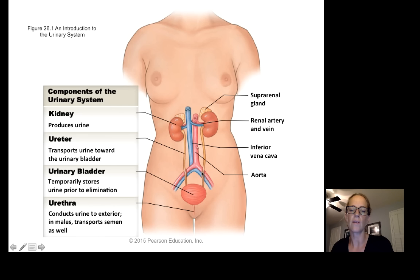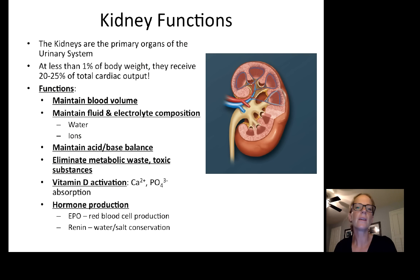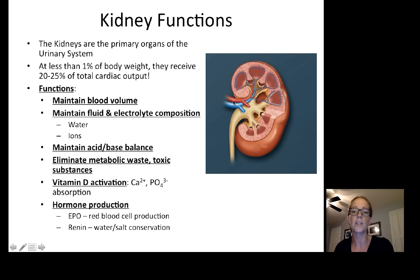This is just an overview of the kidneys within the body, and I want to emphasize here the heavy blood supply that enters and leaves the kidneys. The kidneys are the primary organs of the urinary system. At less than 1% of the total body weight, they receive 20 to 25% of the total cardiac output. In other words, they have a huge blood supply, which enters through the renal artery.